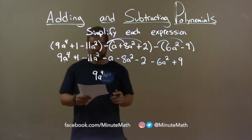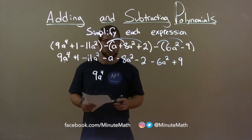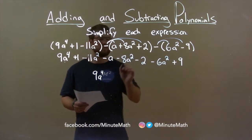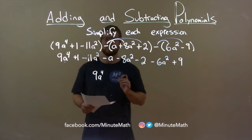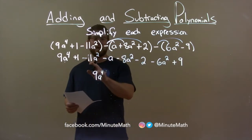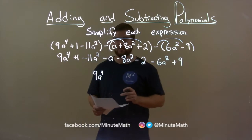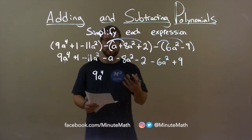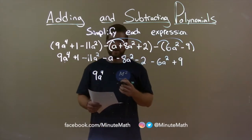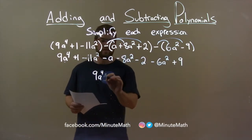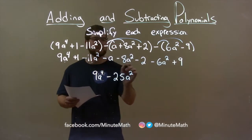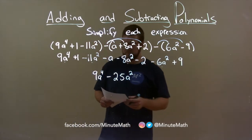The next highest degree I see is a squared, and we have three of them: 11a squared, 8a squared, and 6a squared. If we combine, a minus 11a squared minus 8a squared is a minus 19a squared. We add another minus 6a squared to that, and we have minus 25a squared. So we have minus 25a squared right here, and let's put the dots underneath to show that we brought them down.